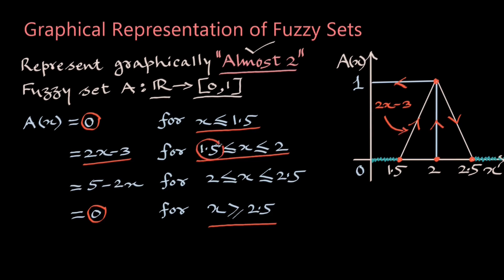When x is between 1.5 and 2, membership grade is defined by a linear function 2x minus 3 represented by this straight line. When x equals 1.5 grade is 0 and when x is 2 grade is 1. For members between 2 and 2.5, the grade is defined by a linear function 5 minus 2x which is this straight line, for which when x is 2 grade is 1 and when x is 2.5 grade is 0 again. So the graphical representation of fuzzy set 'almost 2' is this part only.